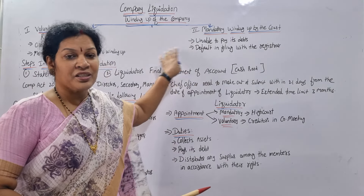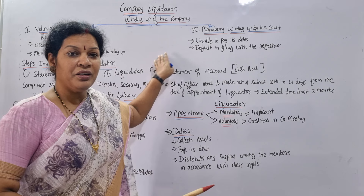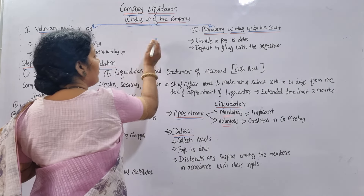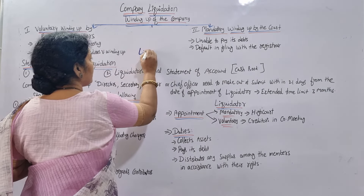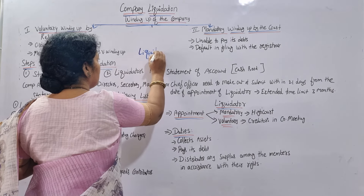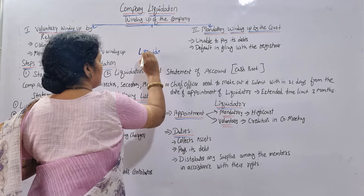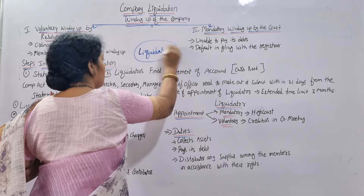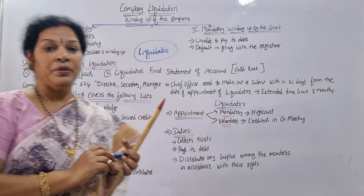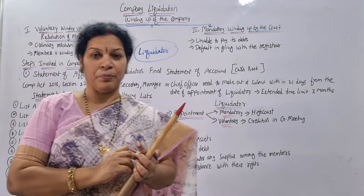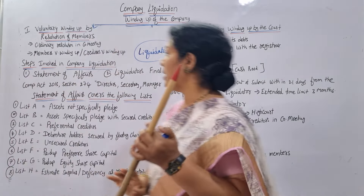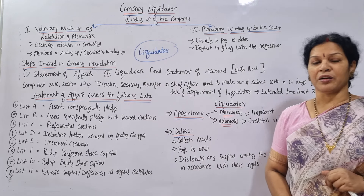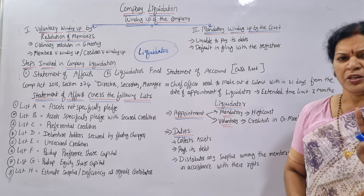In any of these cases, one liquidator is appointed for the winding up of the company. The liquidator takes care of the entire company winding up process. Now, there are a few things to discuss about how we maintain accounts in liquidation — there are only two steps involved in company liquidation.